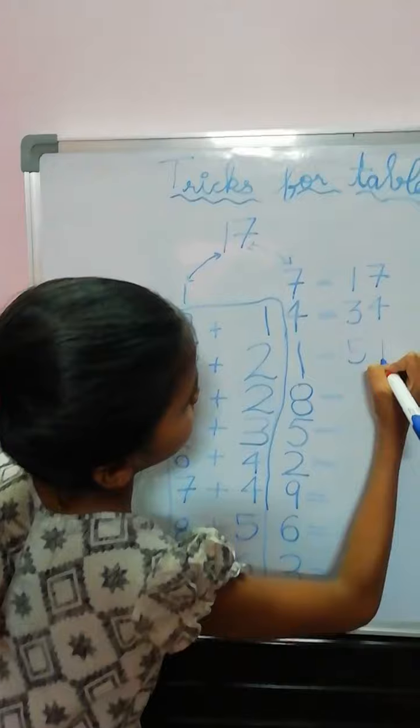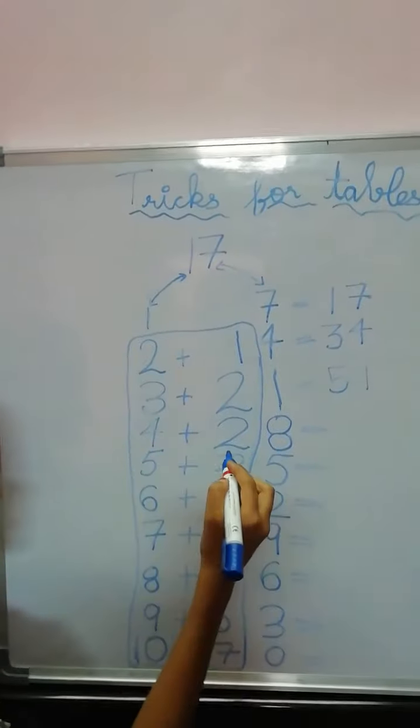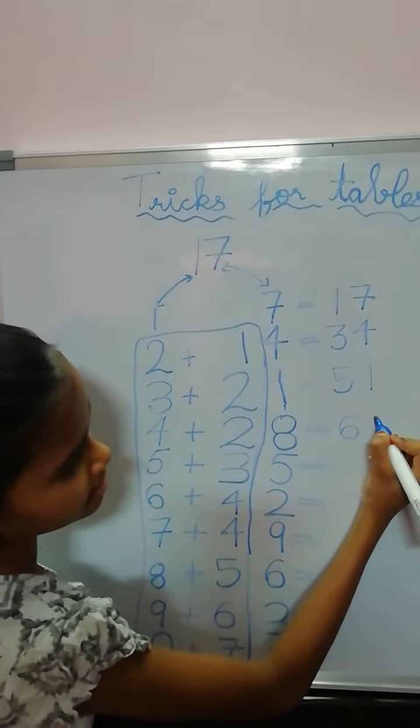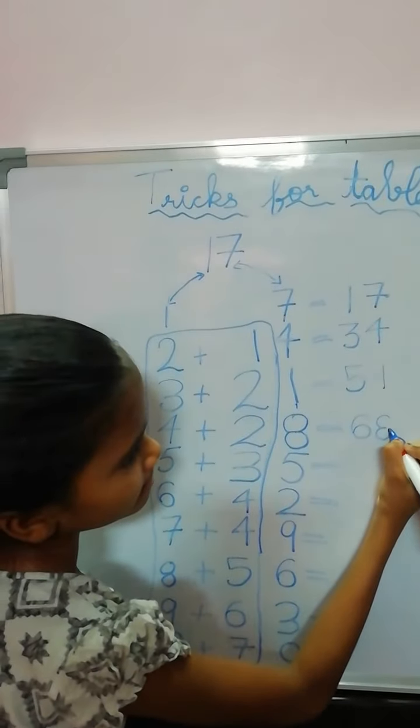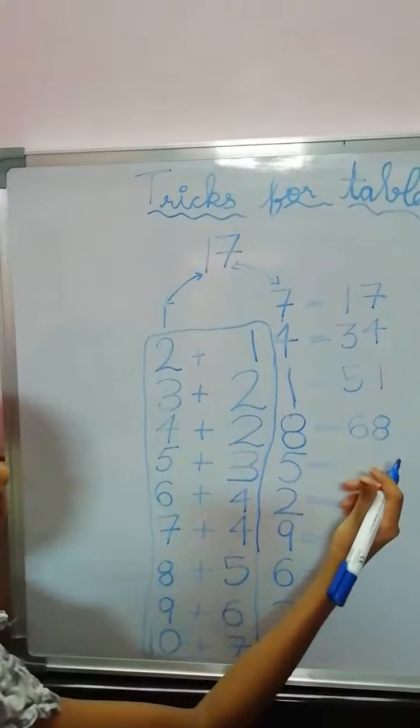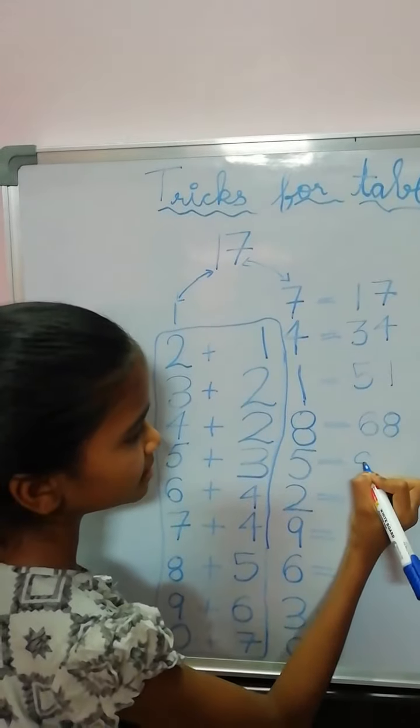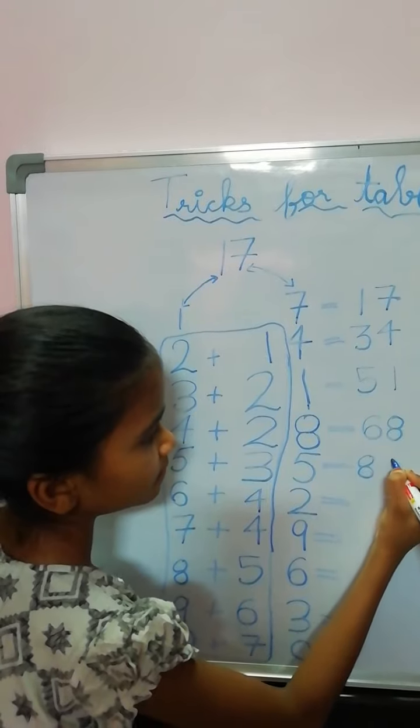17, 3's are 51. 4 plus 2, 6, and 8. 17, 4's are 68. 5 plus 3, 8, 5.